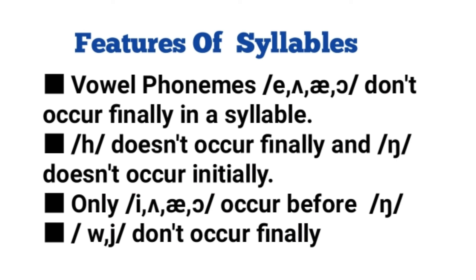It is now time to discuss some prominent features of syllables. First, the lax vowels /ɪ/, /ɛ/, /æ/, and /ʌ/ do not occur finally in a syllable. Second, the velar nasal /ŋ/ does not occur initially in a syllable. Third, only the lax vowels /ɪ/, /ɛ/, /æ/, and /ʌ/ occur before /ŋ/. And lastly, the glides /w/ and /j/ do not occur finally in a syllable.